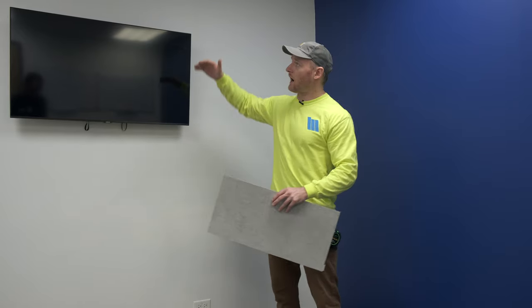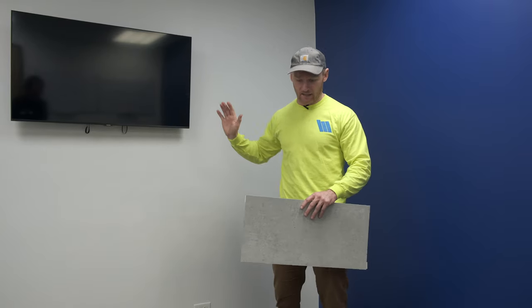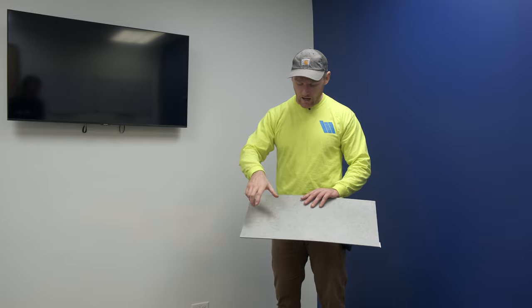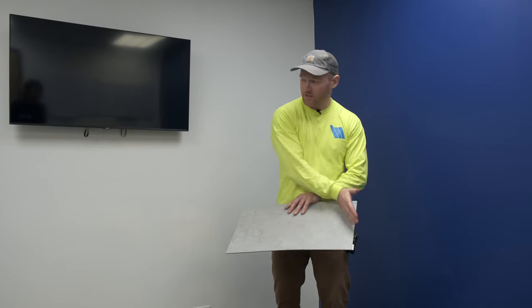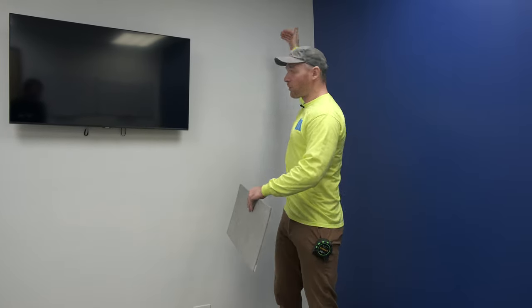This wall behind me is 93 by 126. We're going to be using a running bond type pattern, which means we're going to use about a third of this tile, eight inches, and then the other 16 will fit on the other side of that, and we'll stagger them accordingly as we go vertical in this process.